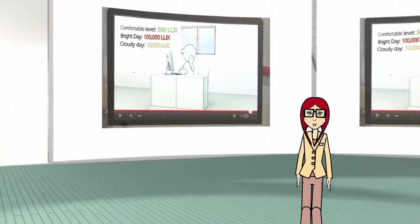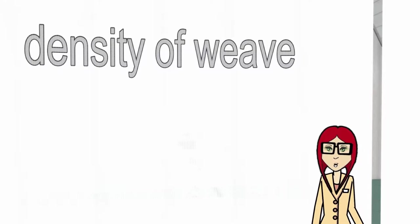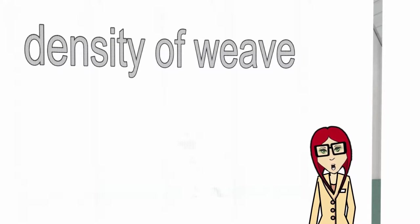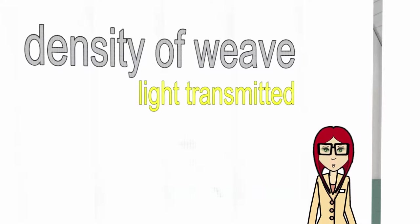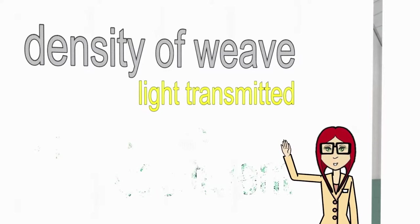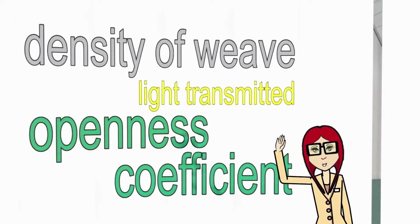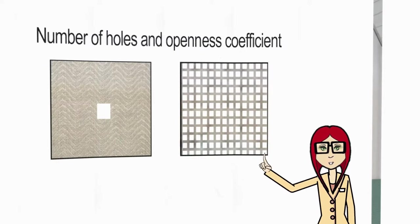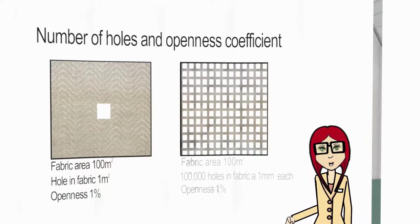A common misconception is that the tightness or density of the weave of a blind fabric controls the levels of light transmitted. This is called the openness coefficient and is simply a ratio of the amount of holes in the fabric.